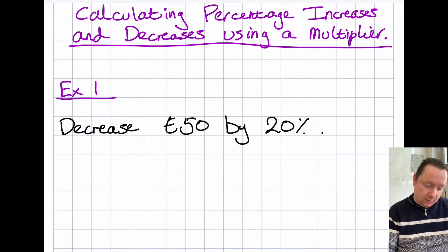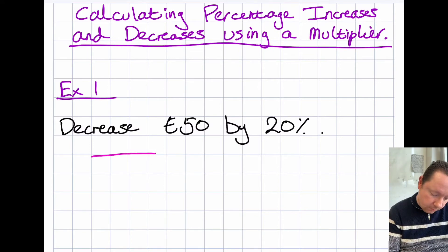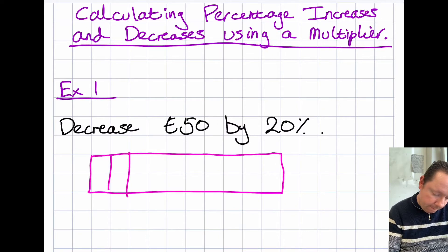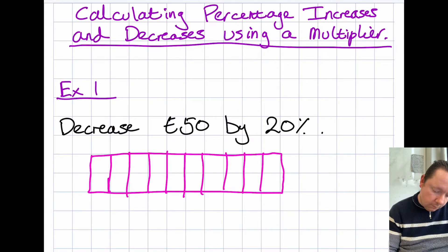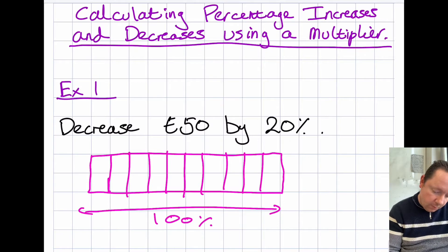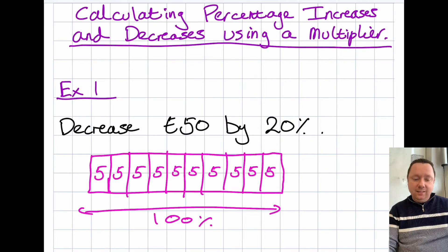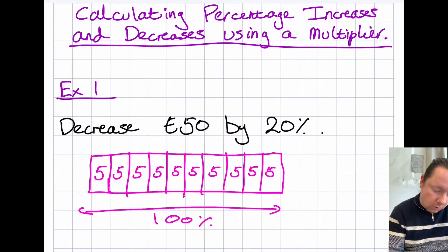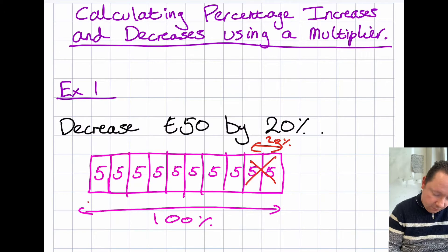Decrease £50 by 20%. Let's imagine a bar. We split it into 10, so this whole bar would be 100%. Each piece would be 5, because there's 10 of them to make 50. I want to decrease it by 20%, so I want to get rid of a couple of these, because that is 20%. That would leave me with just this amount here, and that amount is 80%.